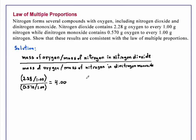One hint in doing this problem is to always take the larger number and place it in the numerator. This makes it easier to see that the ratio is in fact a small whole number.